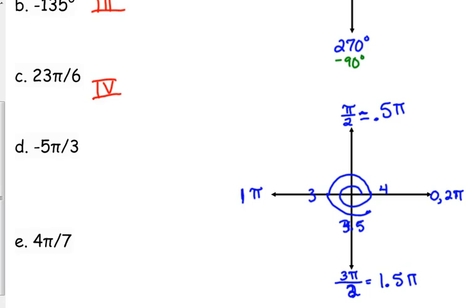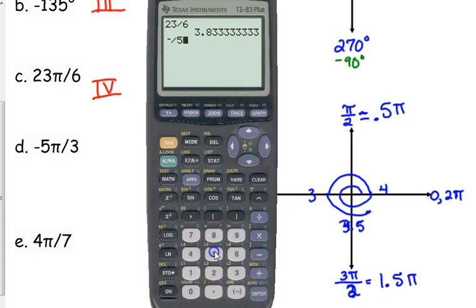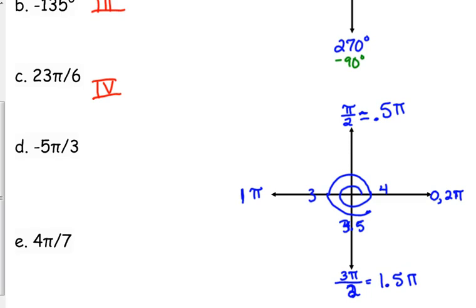Now, you could convert that to degrees and locate it according to its degrees, but you need to be able to navigate with the radians as well. So, negative 5 pi over 3. Negative 5 over 3 is negative 1.667. So, I could go in here and label this with my negatives. This would be negative 0.5. This would be negative 1 pi. This would be negative 1.5 pi. And negative 2 pi. So, what did I say? Negative 1.667. So, that is between negative 1.5 and negative 2. So, this angle is actually in the first quadrant.